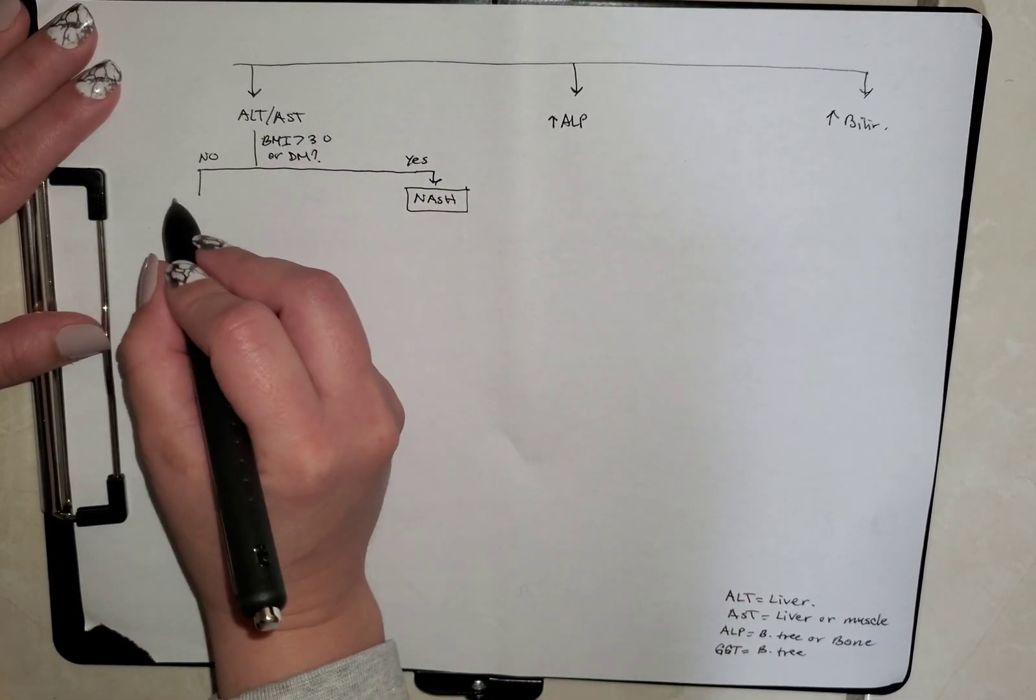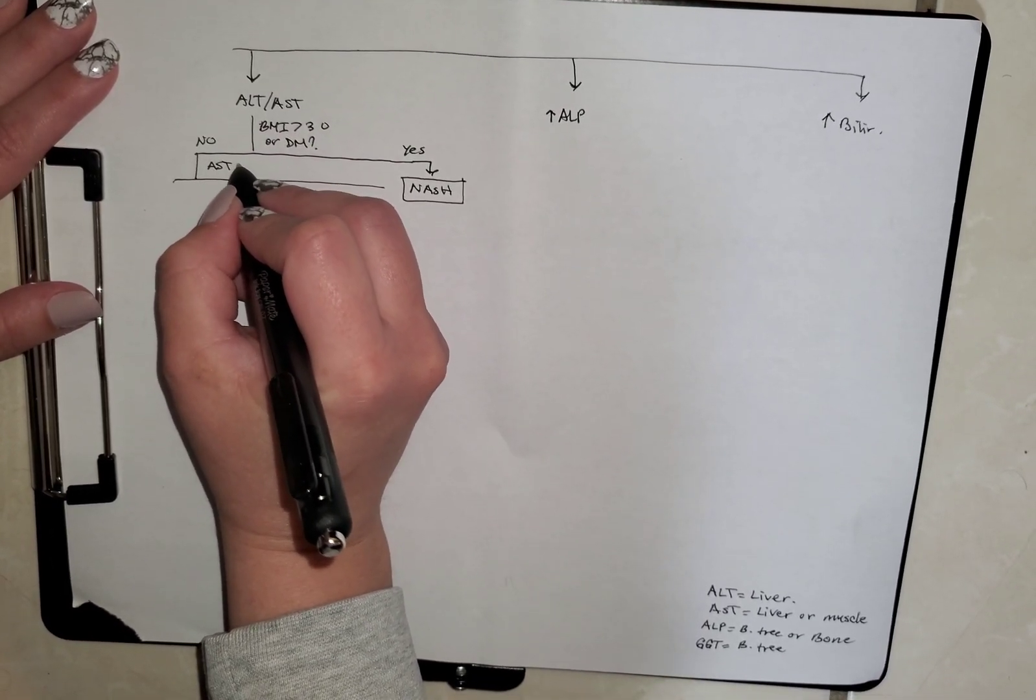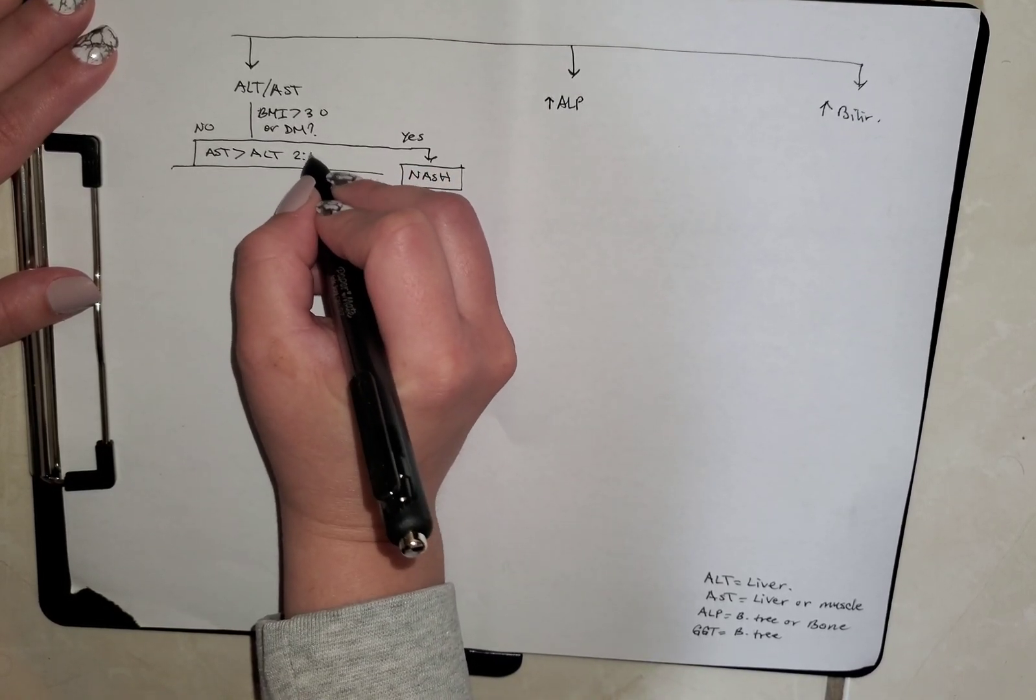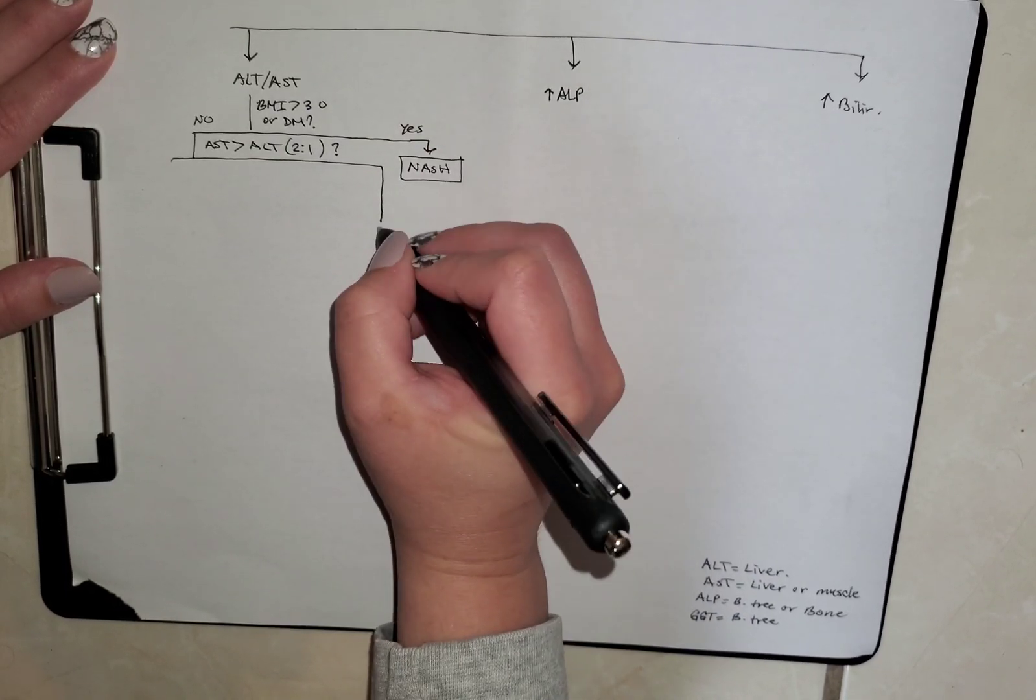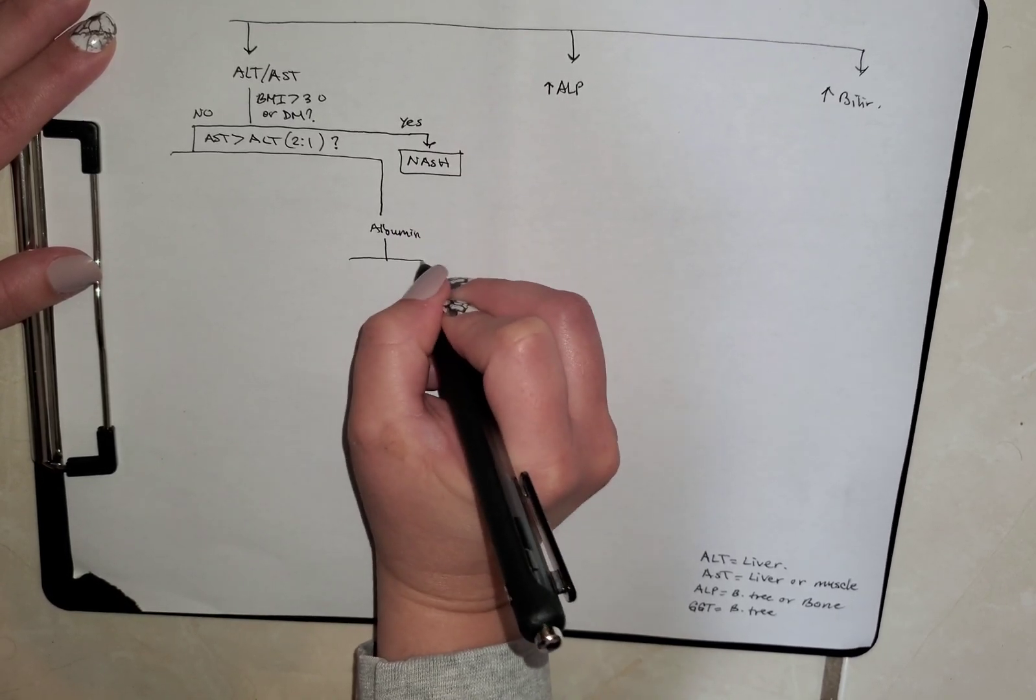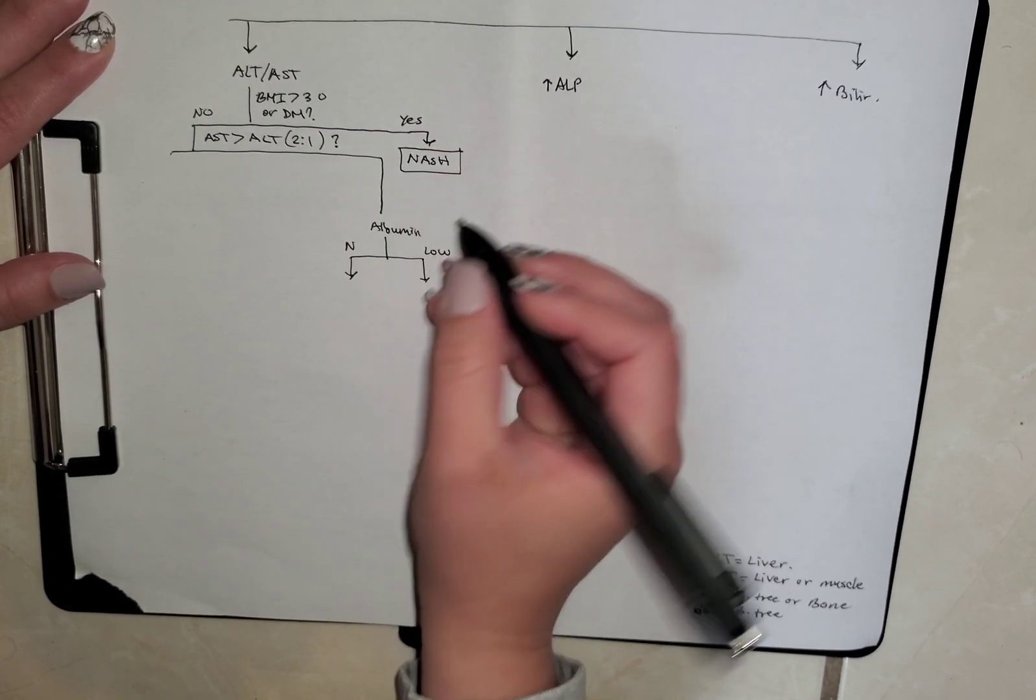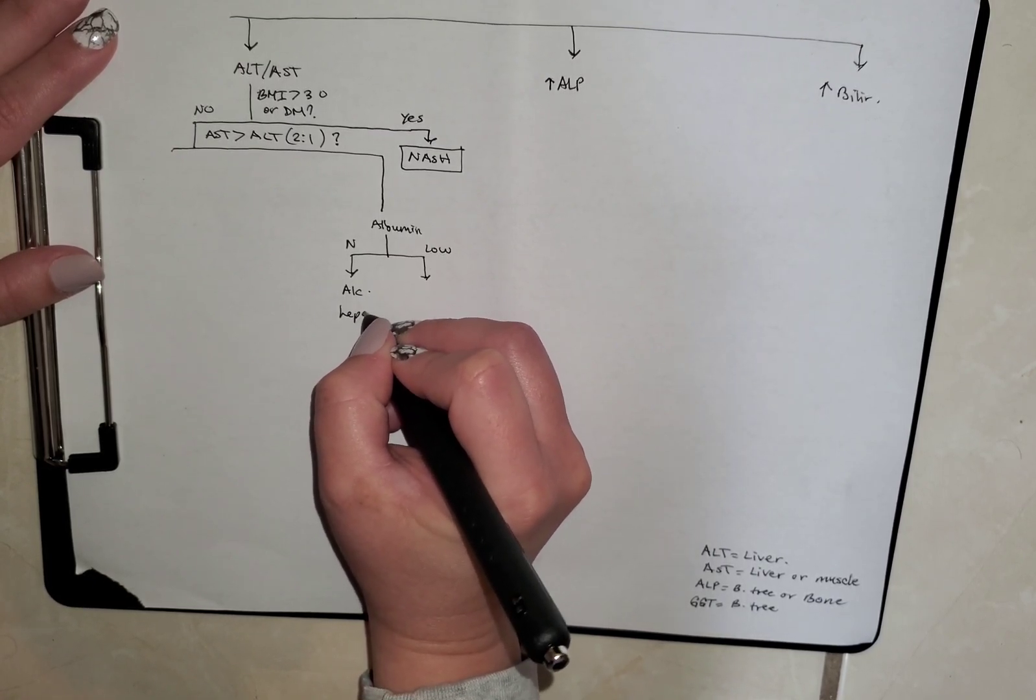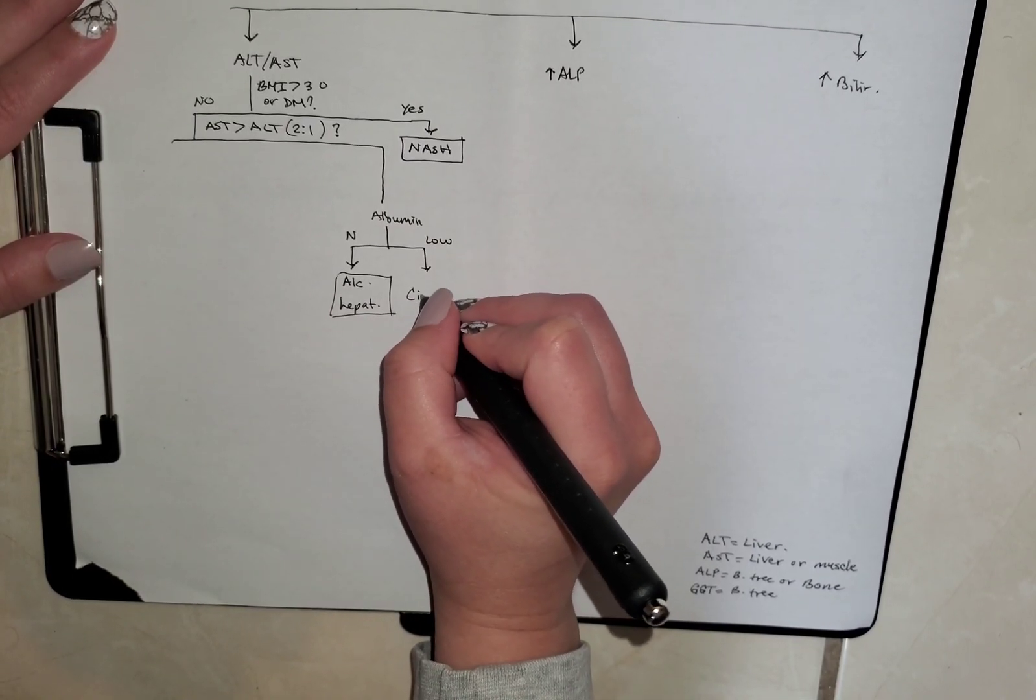If your answer is no, let's ask ourselves the next question. Is the AST more increased than ALT, about a two to one ratio? If that's the case, we need to look at albumin. Is albumin normal or low? If albumin is normal, we're looking at alcoholic hepatitis. If albumin is low, we're looking at liver cirrhosis.